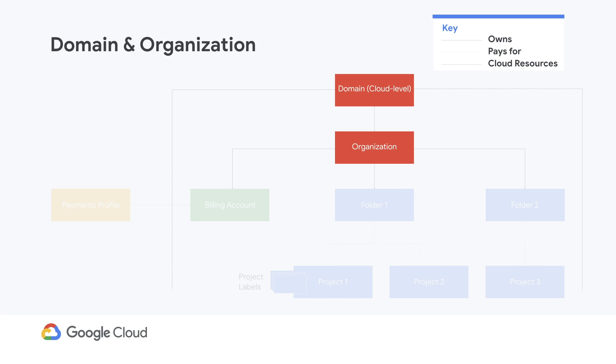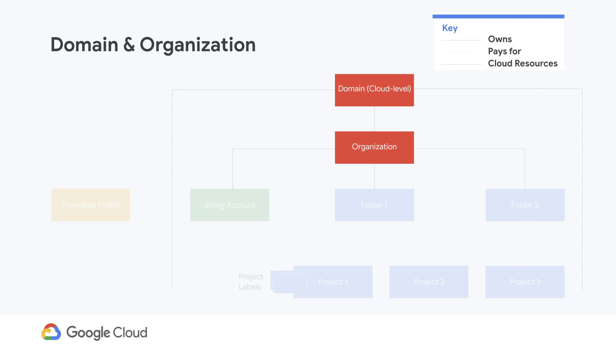If you're an individual user with a G Suite or Cloud Identity account, you may not have an organization, which means that some features won't be available to you until you create one. If you're getting started with an organization or migrating existing projects to a new organization, the Organization Setup Wizard may be a good place to begin. The wizard guides you through recommendations and steps for setting up everything. The domain is handled through G Suite or Cloud Identity and helps you manage user profiles, while the organization is managed through the GCP console and lets you manage GCP resources and access.